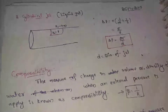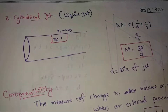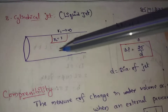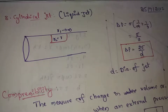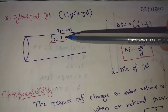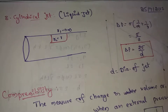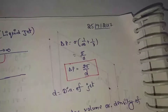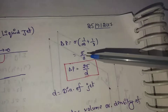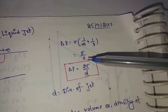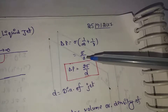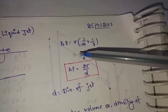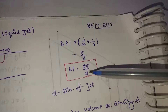Next is the liquid jet, also called a cylindrical jet. This shape has R1 equal to infinity, and there is a length along the axis. R2 equals R. Substituting, Delta P equals sigma by R. Since R equals D by 2, this gives Delta P equals 2 sigma by D, where D is the diameter of the liquid jet.